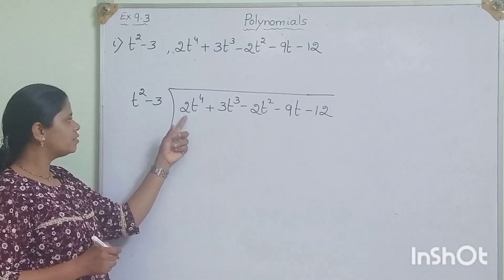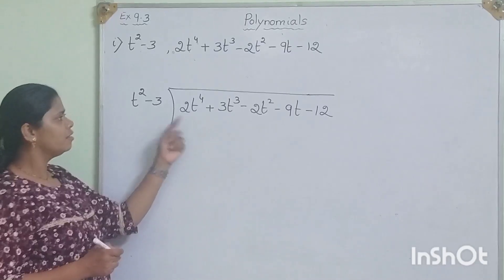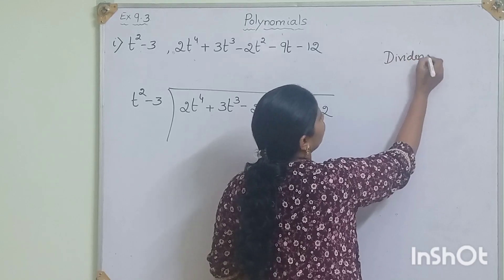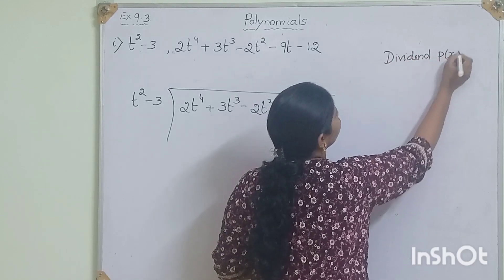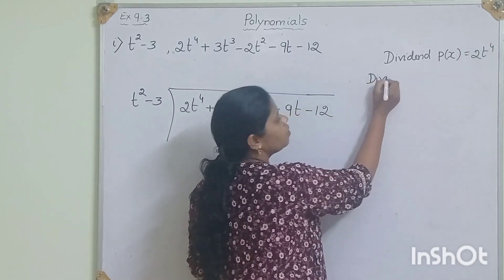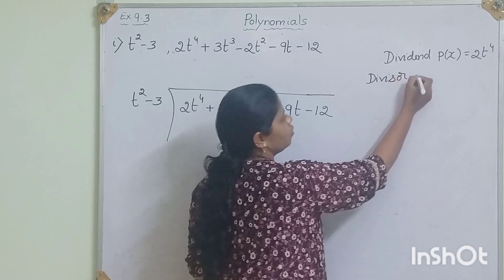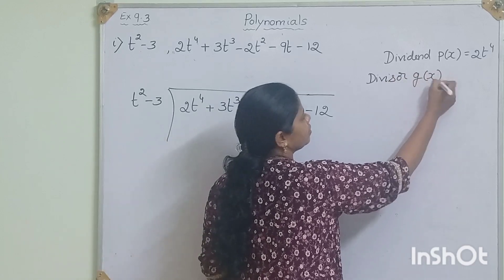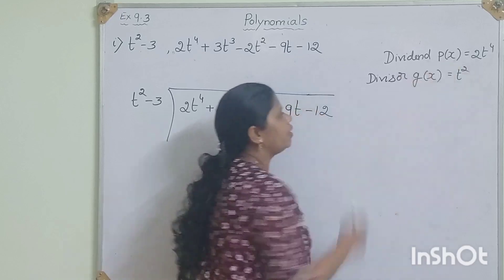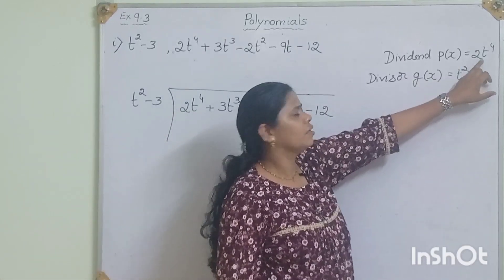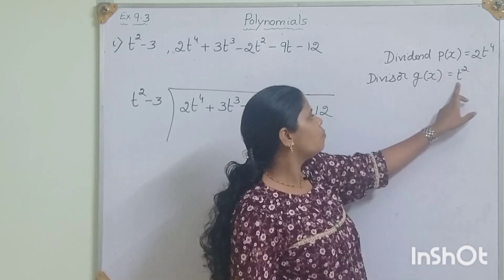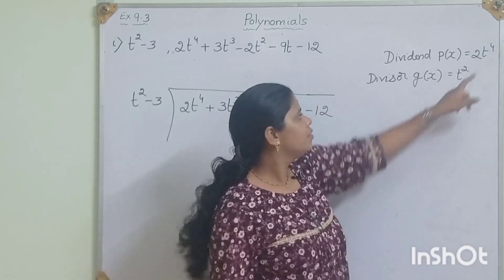Which is the first term of the dividend? The first term of p(x) is 2t to the power of 4. And the first term of the divisor g(x) is t squared. Now compare the degree: t to the power of 4 versus t squared. The degree of the dividend is larger, so we can divide.